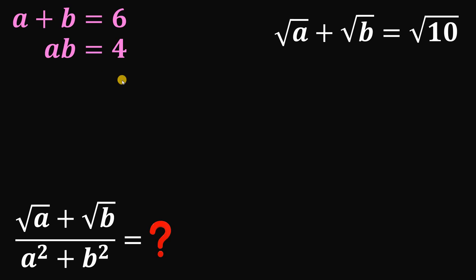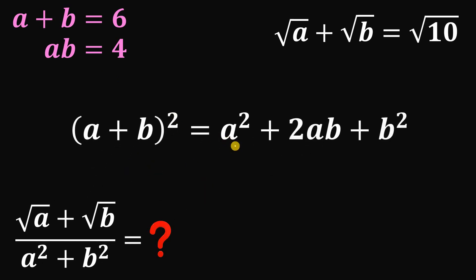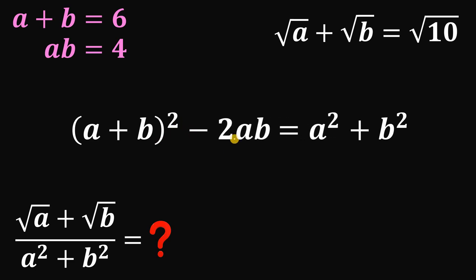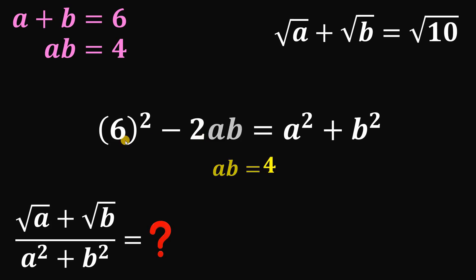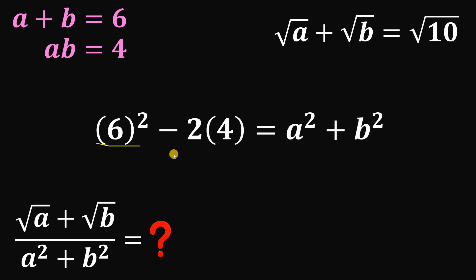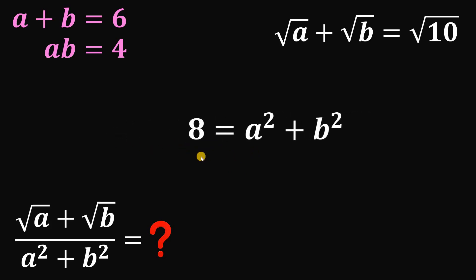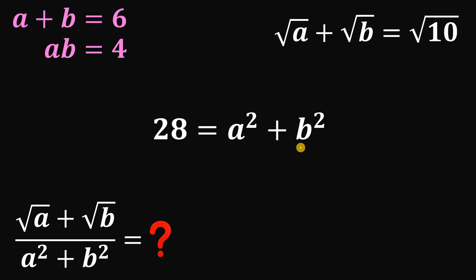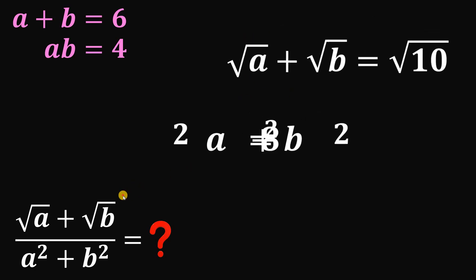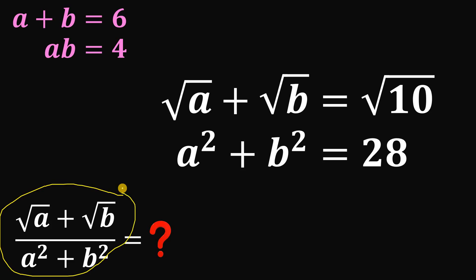Now for the value of a squared plus b squared. When we square a plus b, we get a squared plus 2ab plus b squared. So a squared plus b squared equals a plus b raised to the power of 2 minus 2 times ab. With a plus b equal to 6 and ab equal to 4: 6 squared is 36, 2 times 4 is 8, and 36 minus 8 is 28. So a squared plus b squared equals 28.